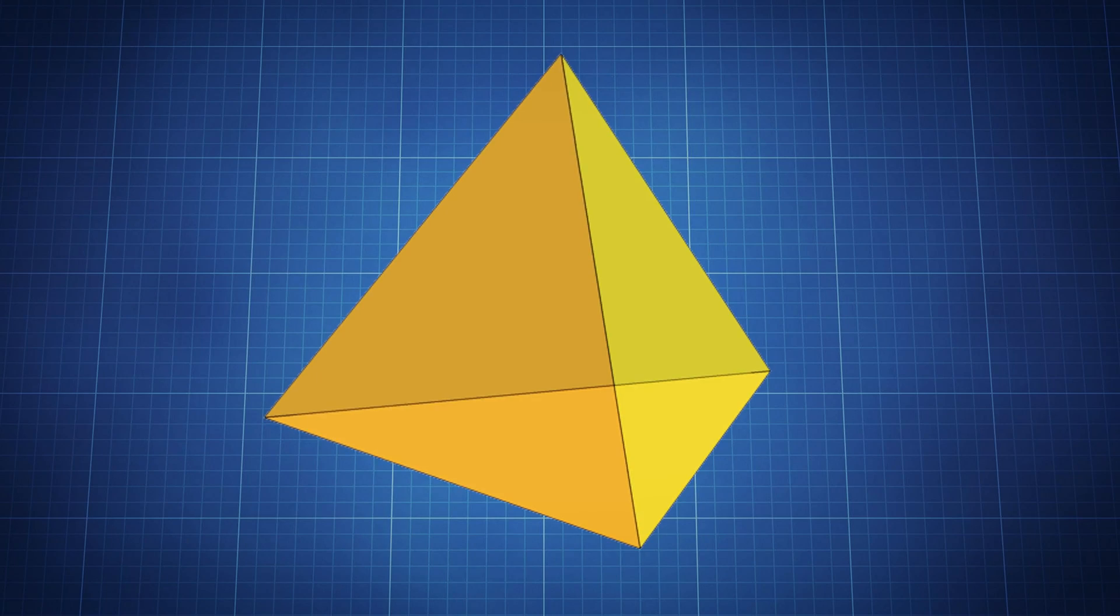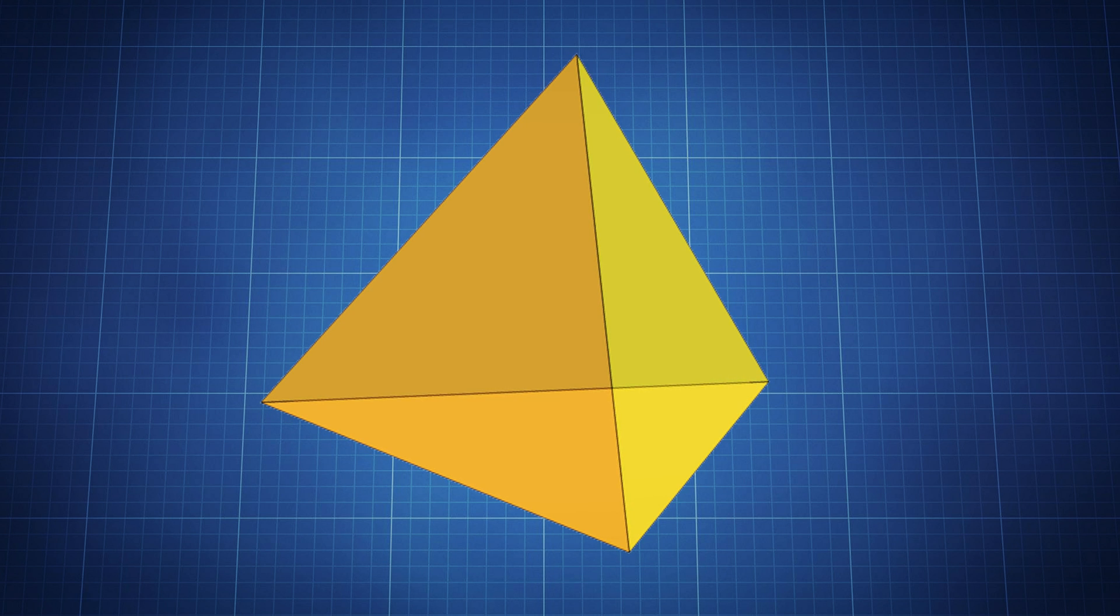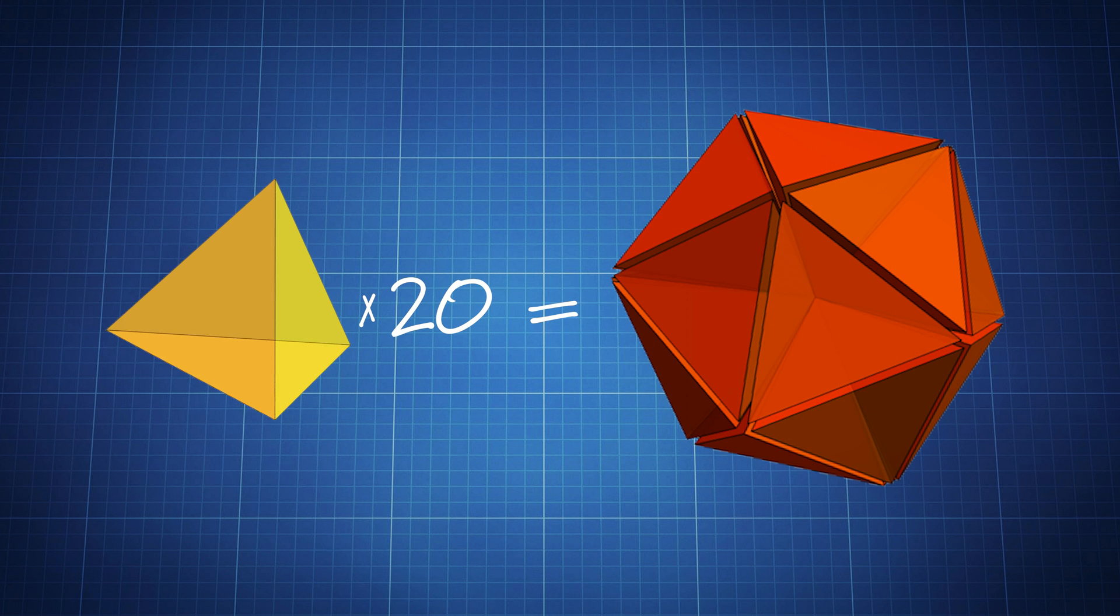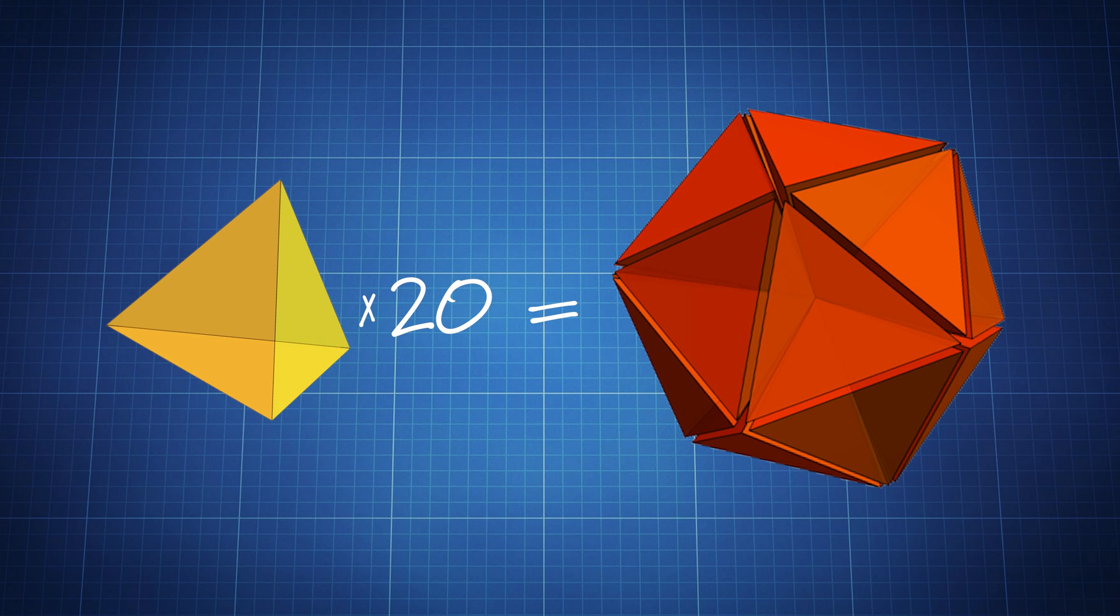Each tetrahedron has four different planes, four different equilateral triangle faces. So when you take 20 tetrahedra, then you have a total of 80 of these two-dimensional faces.